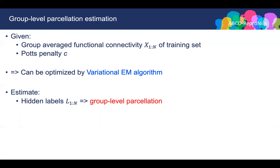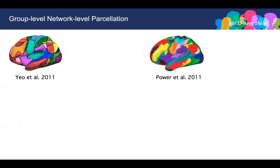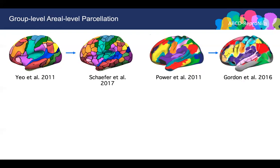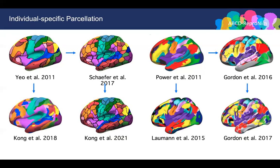So far, the model is still unsupervised. Here are two group-level networks estimated by different unsupervised models; there are also group-level area-level parcellations. However, the group-level parcellations do not capture individual-specific parcellation features. Therefore, I will now introduce the supervised model for estimating individual-specific parcellations.